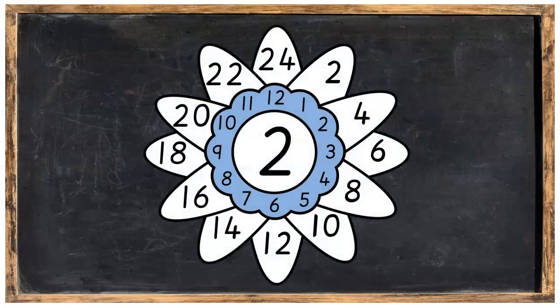Here we're going to skip count on the number flower 12 times. So if we hop one time we'll land on two. Jumping two times we'll land on four. Hopping three times we'll land on six. Four times we'll land on eight. Five times we will land on ten.